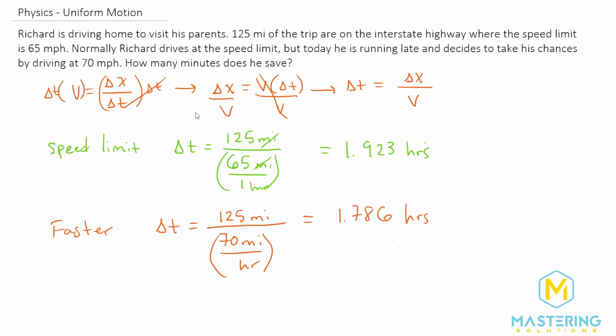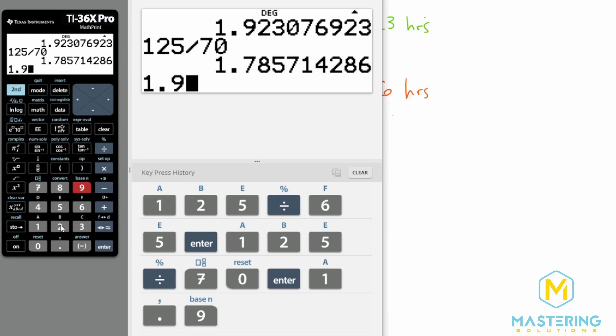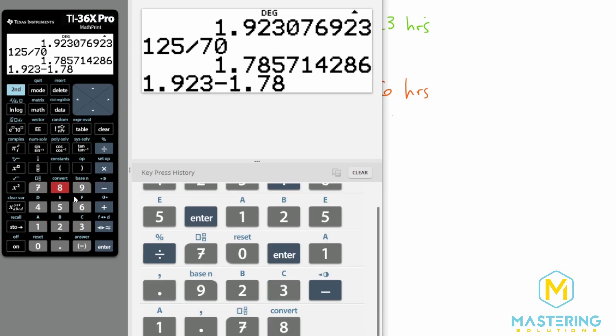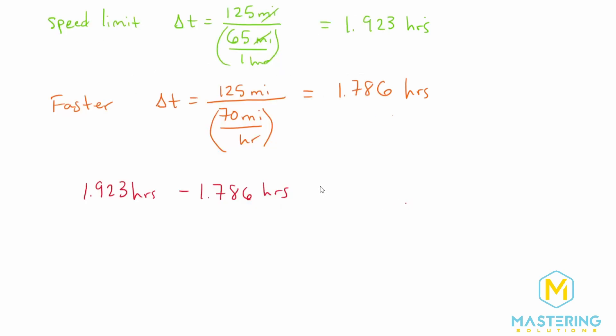And so now what we're going to do is let's subtract both of those from each other to find the difference. So we have 1.923 hours minus 1.786 hours. 1.923 minus 1.786 gives us 0.137 hours.